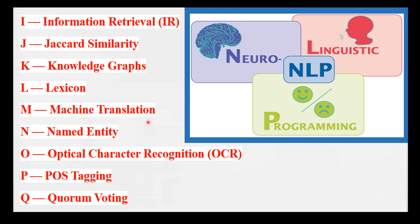N is for Named Entity — a specific type of entity such as a person, organization, or location identified in text. Imagine a list of famous people, companies, and countries.